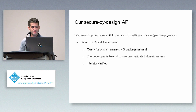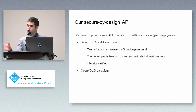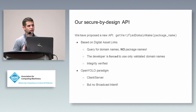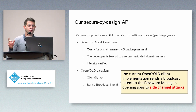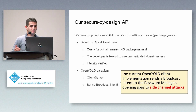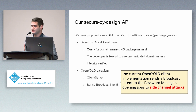We have proposed a secure-by-design API — more details are in the paper. It takes a package name and returns a verified domain name, obviously based on Digital Asset Link. It queries for domain names rather than package names, forcing the developer to use only validated domain names so credentials can easily be mapped to domain names. It also verifies integrity. It follows the OpenYolo paradigm as a client-server architecture, but we don't send broadcast intents to the password manager because the current OpenYolo client implementation uses broadcast intents that can be eavesdropped by every application installed on the phone.